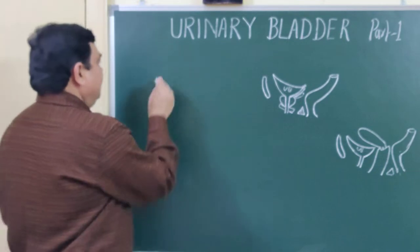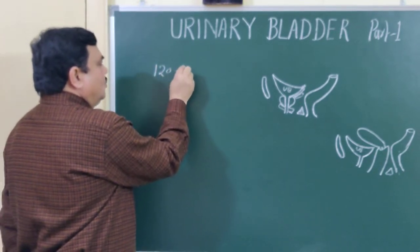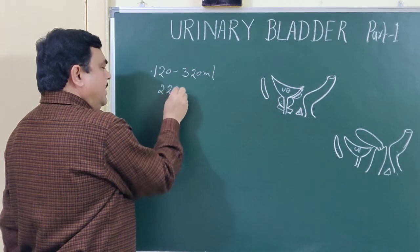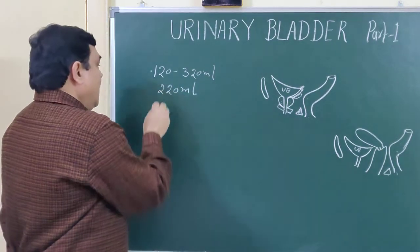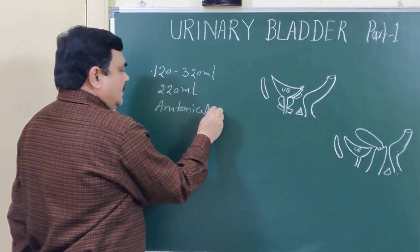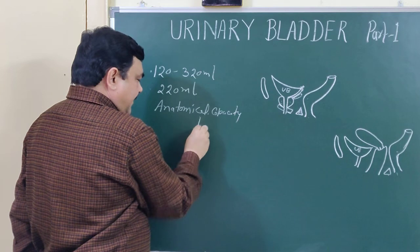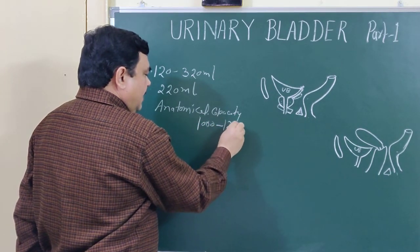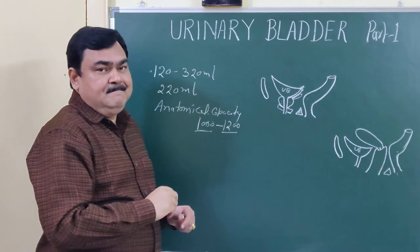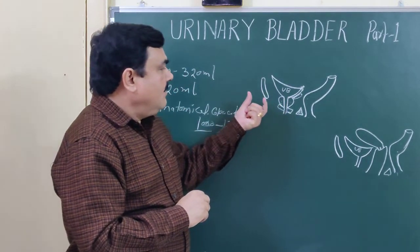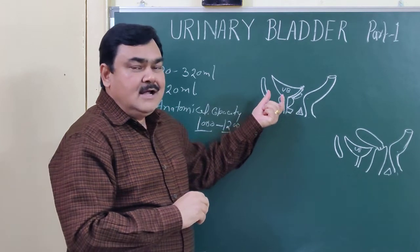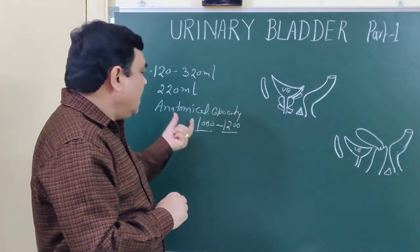The average capacity is about 120 to 320 ml, and its mean capacity is about 220 ml. The anatomical capacity is about 1 liter or 1200 ml. This is the amount of urine by which the urinary bladder ruptures. So this is the anatomical capacity.